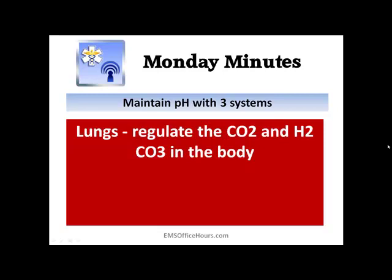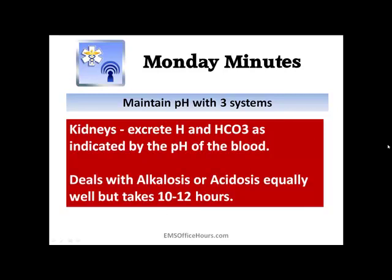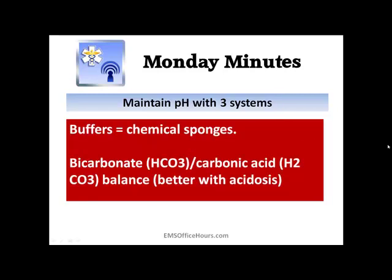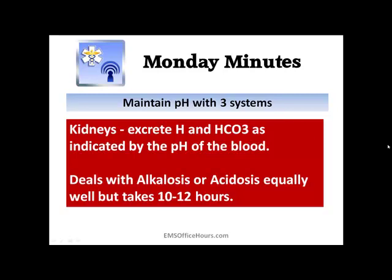Finally, the third system is the kidneys. We talked about how the kidneys play a role in pH and hydrogen balance — getting rid of hydrogen and HCO3. This is all indicated by the pH of the blood, which triggers the kidneys into action to deal with acidosis or alkalosis. But the kidneys take a little bit longer, so you're going to see things like the lungs and the bicarbonate buffers working first before the kidneys kick in — and that depends on what stage the patient is in when you get called.